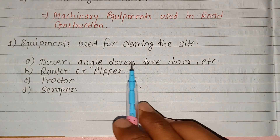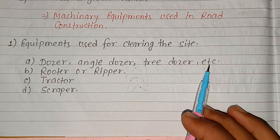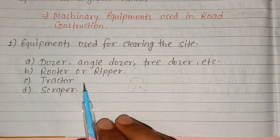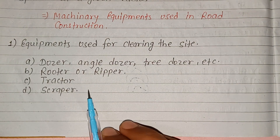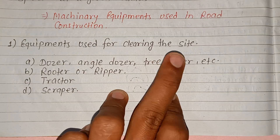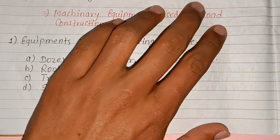Equipment used for clearing includes: dozer, angle dozer, tree dozer, rooter, reaper, tractor, scraper, and side light clean equipment.